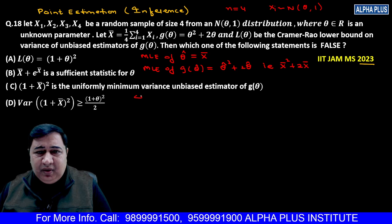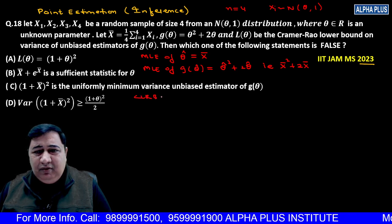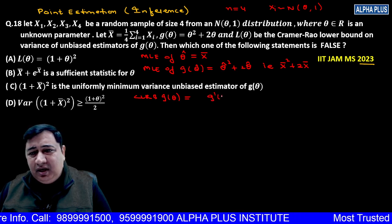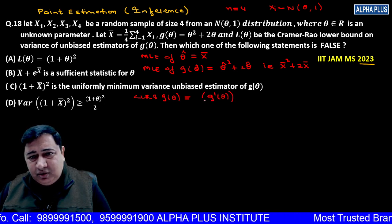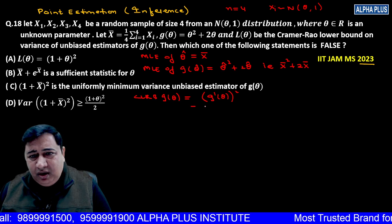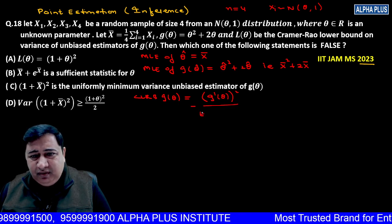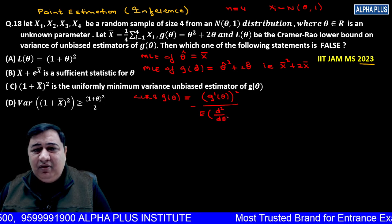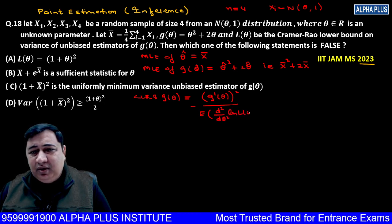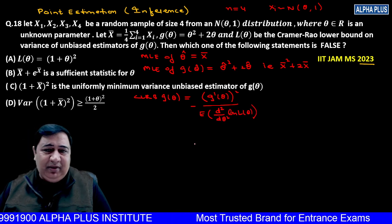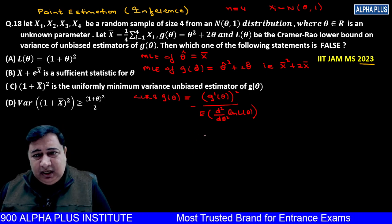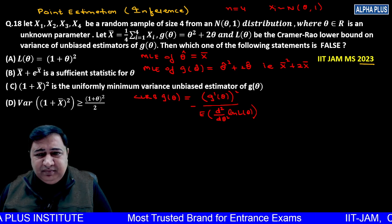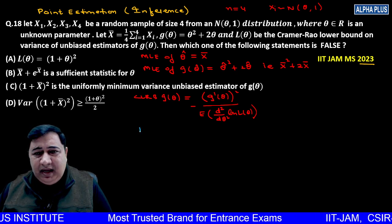Now we need to find the CRLB of g(theta). The formula is: g'(theta) squared divided by negative reciprocal of expectation of double derivative of log likelihood. This is the formula for CRLB.